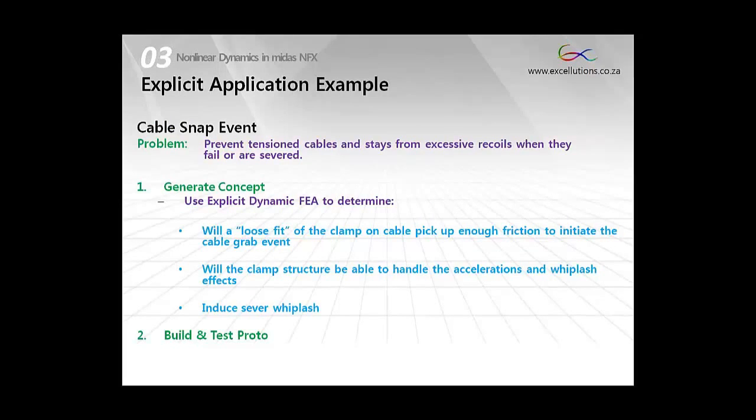An example for the use of explicit analysis. Here is a cable snap event. The application is to design and test a mechanism to grab a cable once it has been severed. Questions that need to be answered from the explicit analysis is will a loose fitting clamp on the cable still have enough friction so that it can actually grab the cable. And the next issue will be the clamp structure. Will there be sufficient structural integrity to withstand the accelerations and whiplash effects?